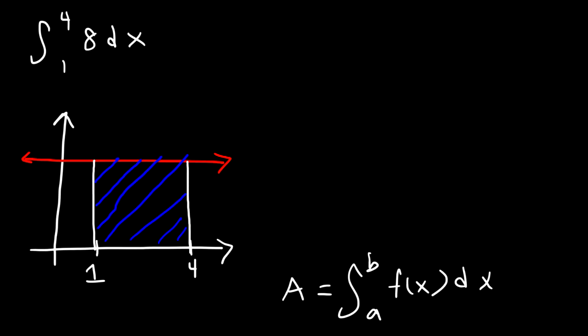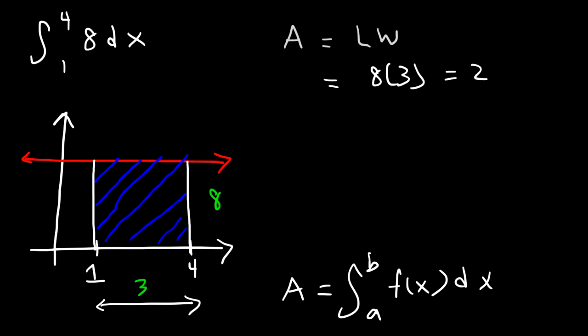So basically we need to find the area of this rectangle. It has a width of 4 minus 1, which is 3, and the height is 8. The area of a rectangle is length times width, so that's going to be 3 times 8, or 8 times 3, which is 24.